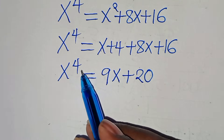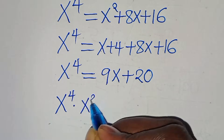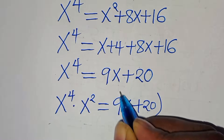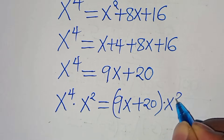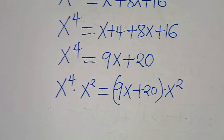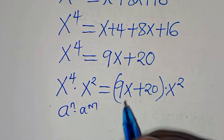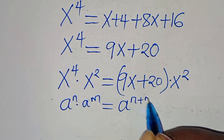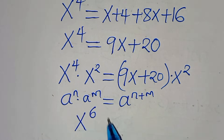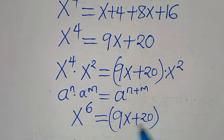The next step: let's multiply x to the power of 4 by x to the power of 2, and also multiply the right side, 9x plus 20, by x to the power of 2. Now x⁴ times x² is in the form a^n times a^m, which equals a^(n+m), so that is x to the power of 4 plus 2, which is x to the power of 6, equals (9x plus 20) multiplied by x squared.